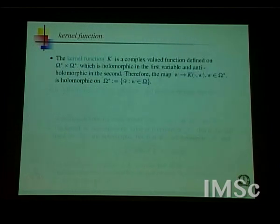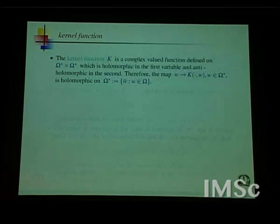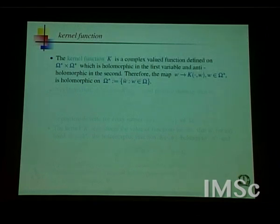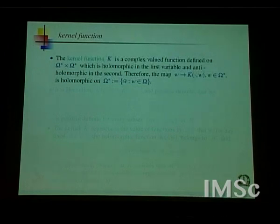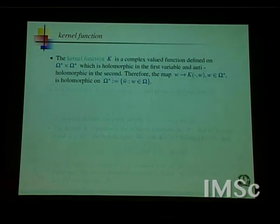The reproducing kernel is a map from Ω* to Ω*. This Ω* is defined as the set of ω̄ such that ω belongs to Ω. You can pretend Ω* equals Ω as in the case of the disk — it doesn't make much difference for the present purposes. But if you want to do geometry seriously, there is a serious issue involving the holomorphic versus anti-holomorphic category. Both categories get mixed up, and you end up going to the C∞ category, working there, and then pushing things down.